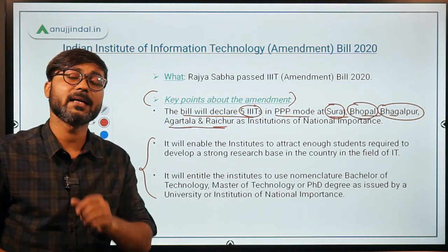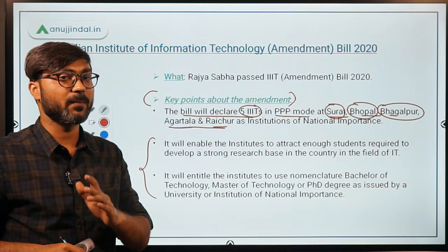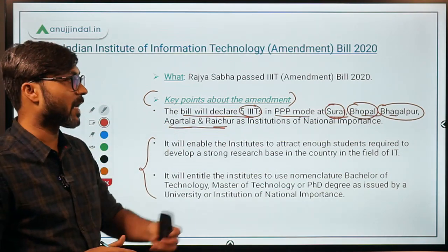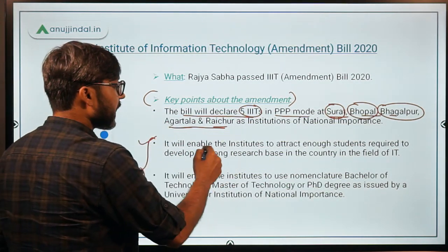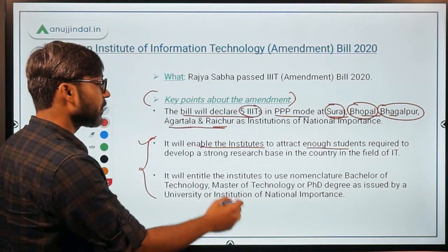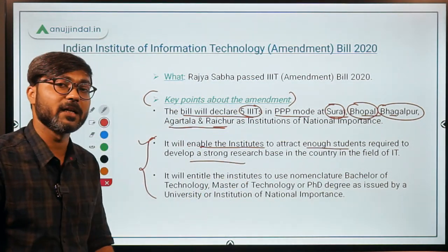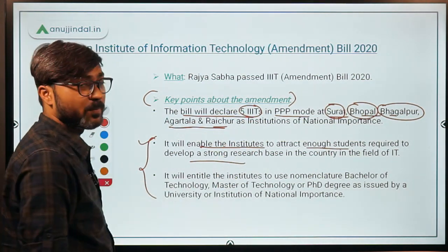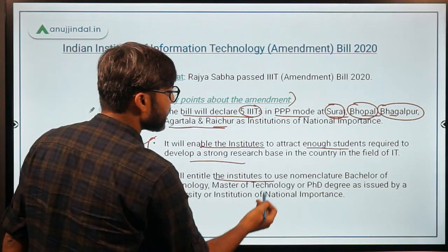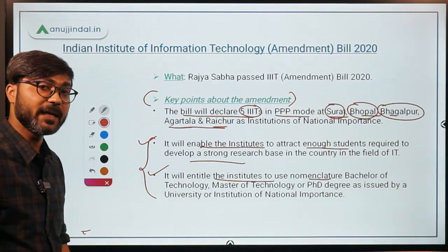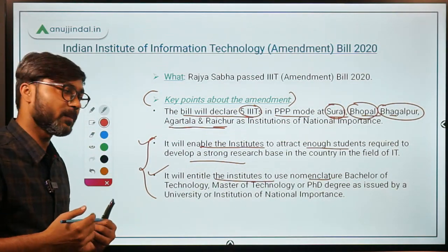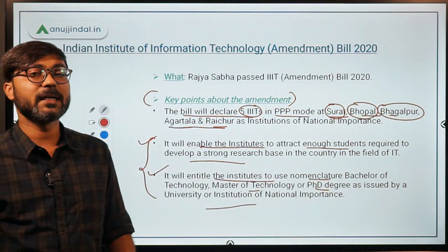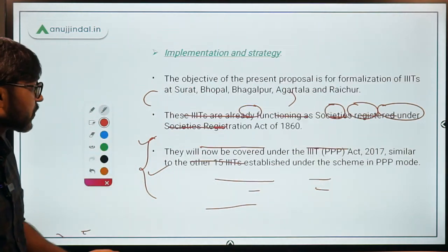The benefit of this bill is that some days ago we studied about Institutions of National Importance, and all those benefits will now be given to these five IIITs as well. It will enable the institutes to attract enough students required to develop a strong research base in our country. It will also entitle the institutes to use nomenclature like B.Tech, M.Tech, and Ph.D — which they were not able to do before — as issued by a technical university or Institution of National Importance.